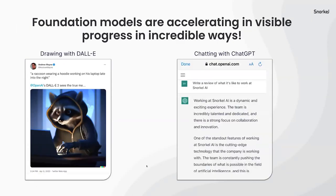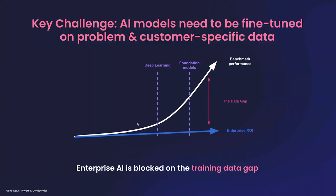Many of us can pull out examples from our Twitter feeds and also from the academic literature — and potentially, though I'd gamble less frequently, from real production use cases — stunning examples and demos of how these models are making incredible progress. Here is just a quick tweet from DALL-E and a snippet of chatting with ChatGPT. There is clearly a step change happening with the scale of the foundation model, so it's a really exciting time to be in AI.